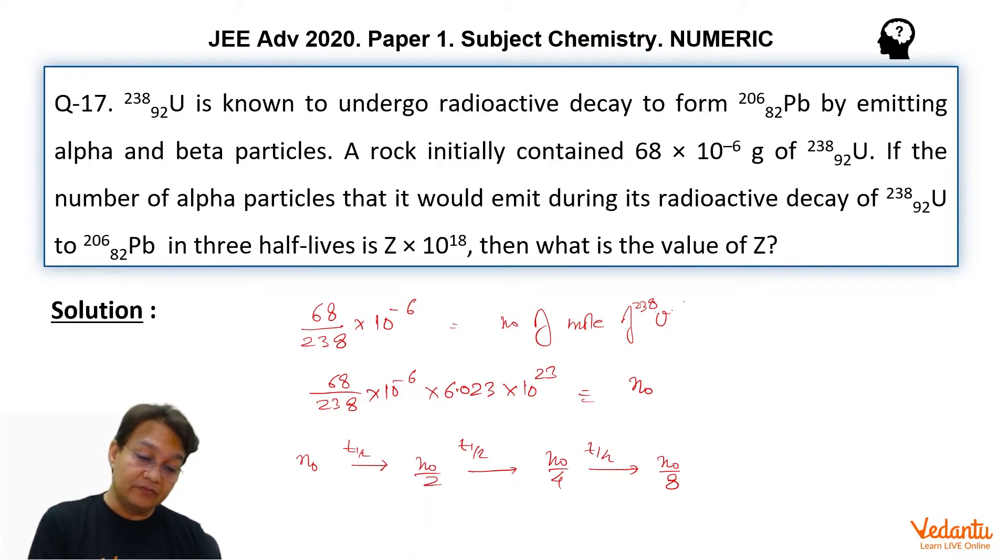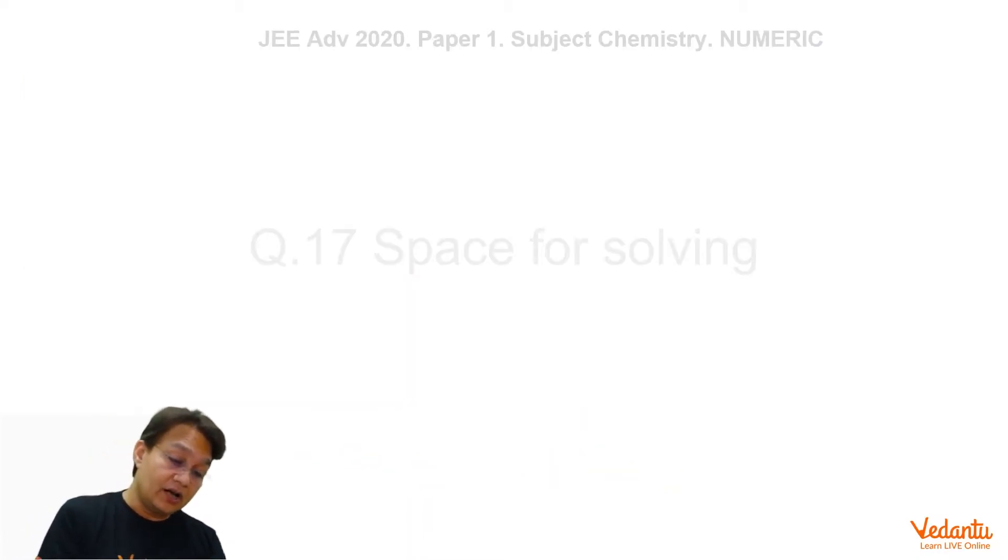So that gives us how many has decayed. So number of alpha particles emitted is equal to N0 minus N0 by 8, which is 7 by 8 N0. So this many uranium has decayed.